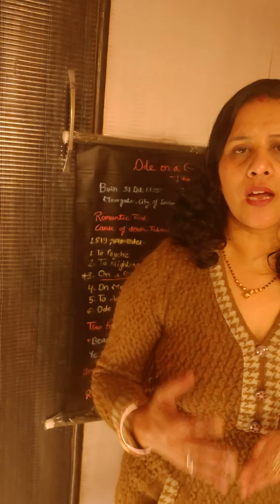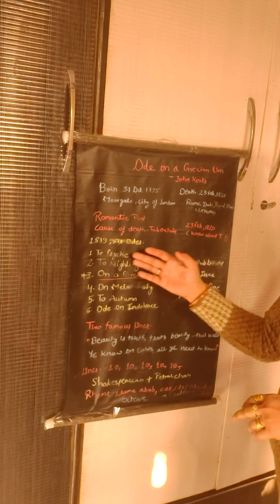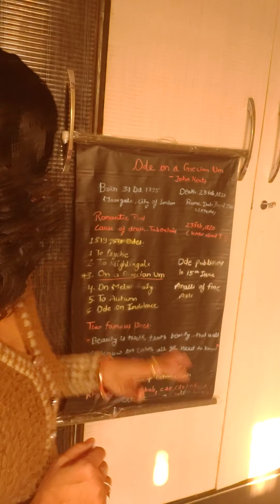On 23rd February 1820, he discovered that he was suffering from tuberculosis, and after one year he died. He wrote six odes in 1819, which includes 'To Psyche,' 'To Nightingale,' 'Ode on Melancholy,' 'To Autumn,' and 'Ode on Indolence.' The interesting fact is that only the 'Ode on a Grecian Urn' had been dated; others were without dates. It was published in the 15th issue of the Annals of Fine Arts.